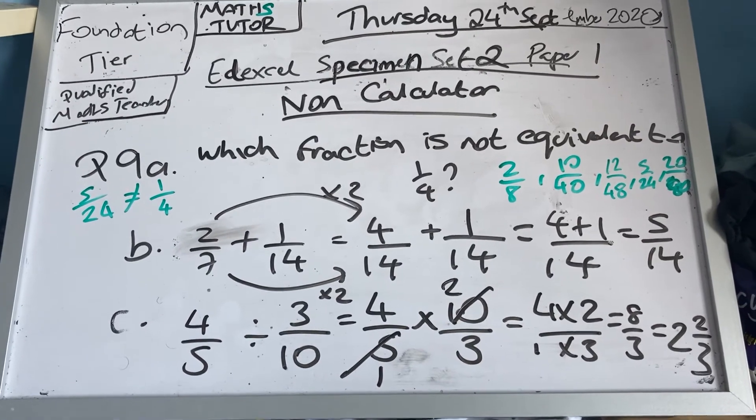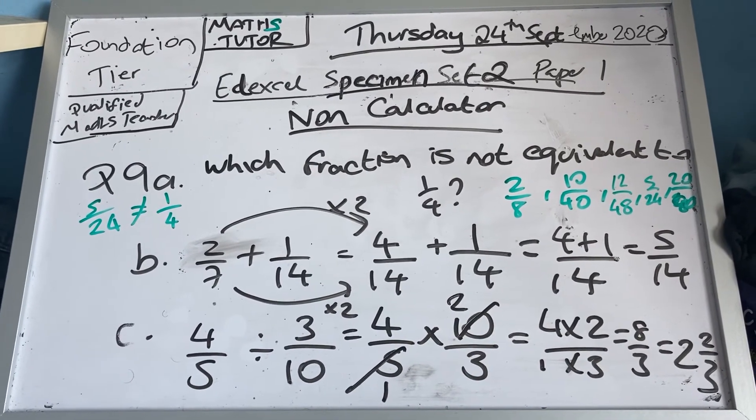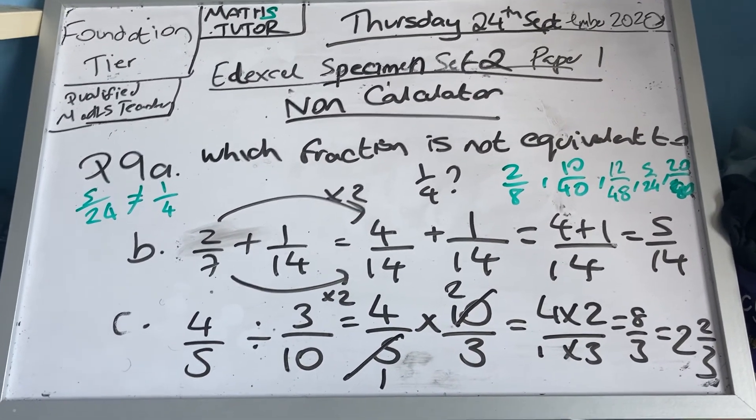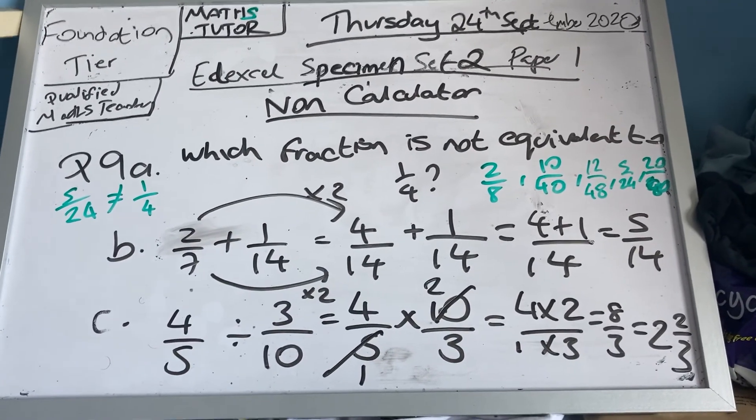So my answer is eight over three, which is two and two-thirds. That was question number nine, guys.